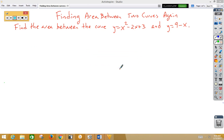In this video, we're going to once again find area between two curves. This time, we're going to find the area between the curves y equals x squared minus 2x plus 3 and y equals 9 minus x.